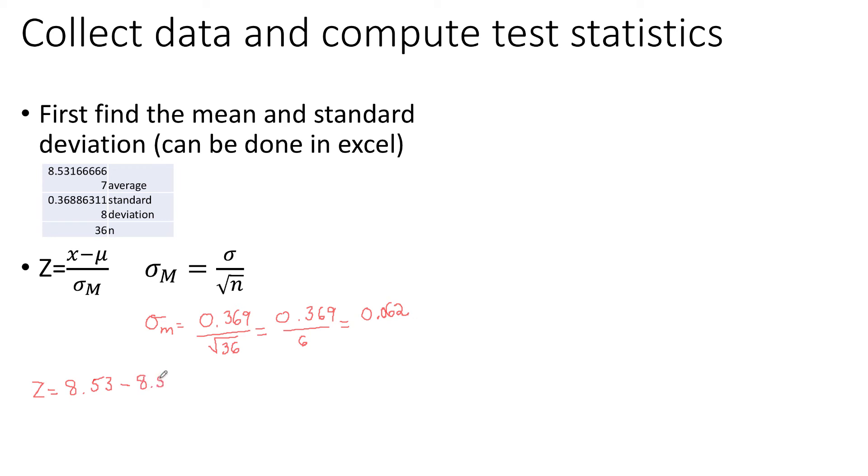and dividing by my standard error. Doing the subtraction, I have 0.03 over 0.062, which results in a value of 0.48.